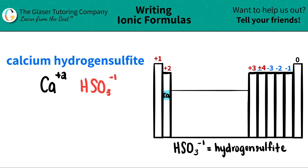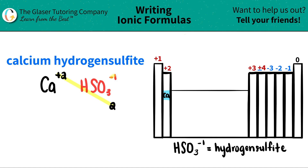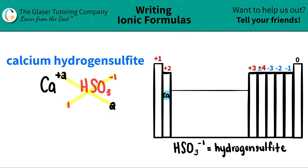Now that I have both components, I just crisscross the charges to determine how many of each I have. The plus two crisscrosses down, telling me that I have two of the hydrogen sulfites. The negative one crisscrosses down, telling me that I have one calcium. When you do this crisscrossing, don't worry about the positives and negatives anymore — we're just using these numbers as subscripts, as counting numbers.